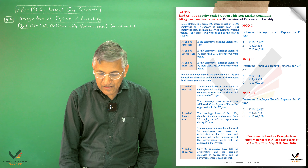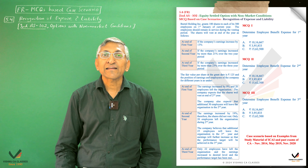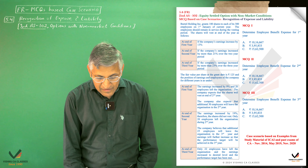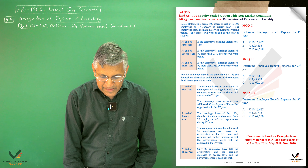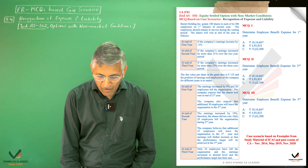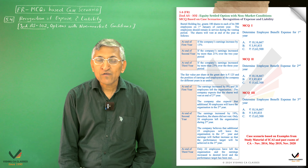The conditions are: Year 1 vesting requires 30% earnings increase; Year 2 requires 21% over two years; Year 3 requires 23% over three years. The fair value per share at the grant date is 125.